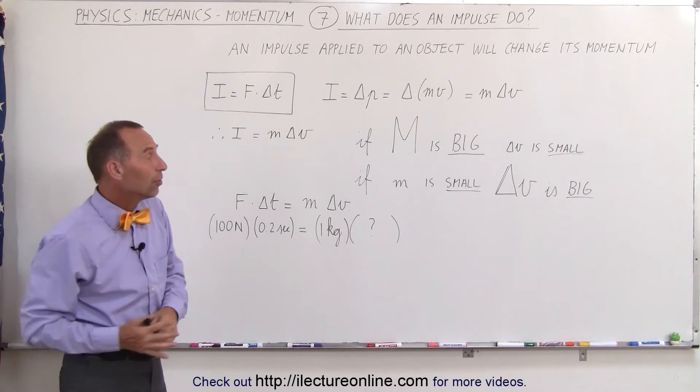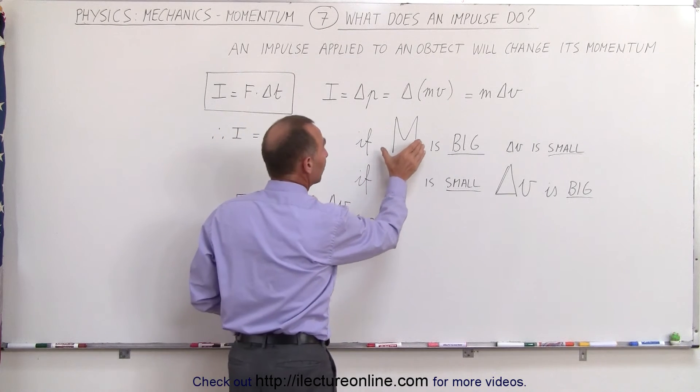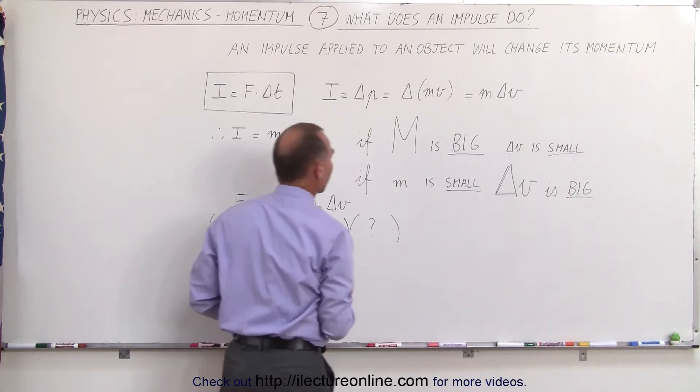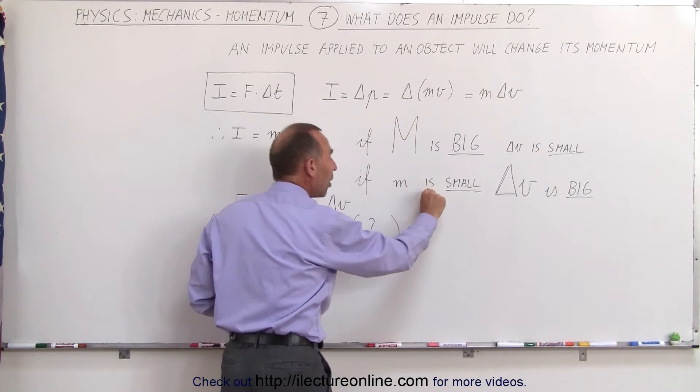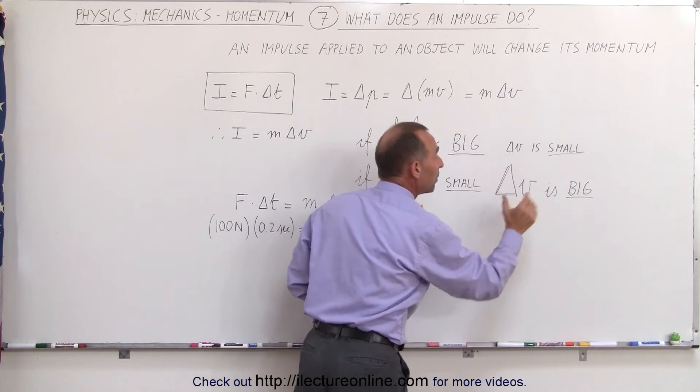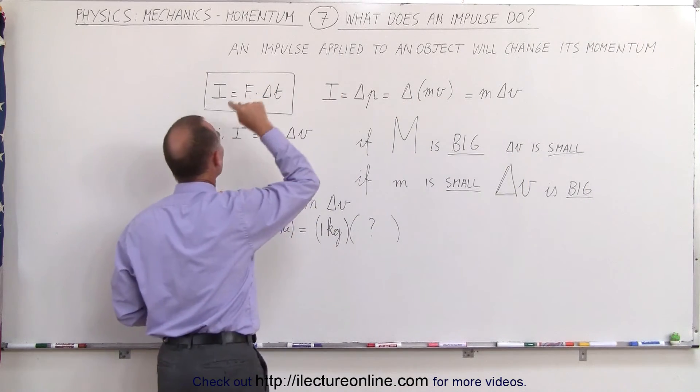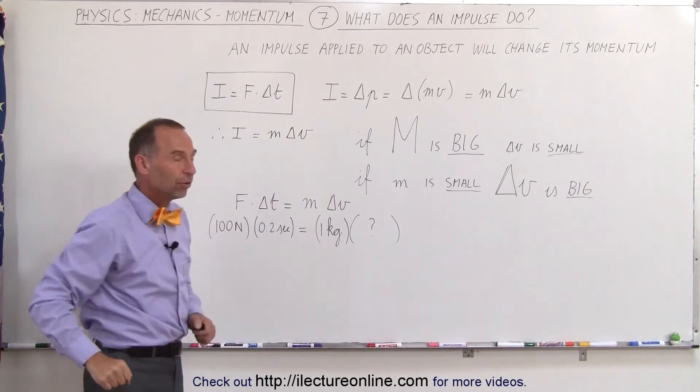Now for a given impulse, if the mass of the object is big then the change in the velocity will be small, and if the mass of the object is small then the change in the velocity will be big. The product of the mass times the change in the velocity will always equal the impulse.